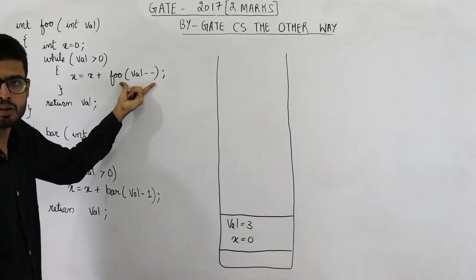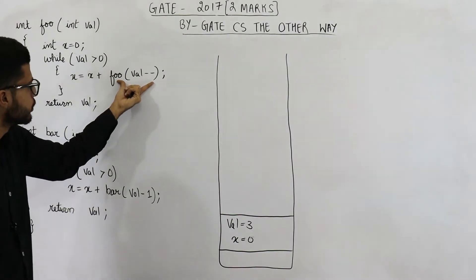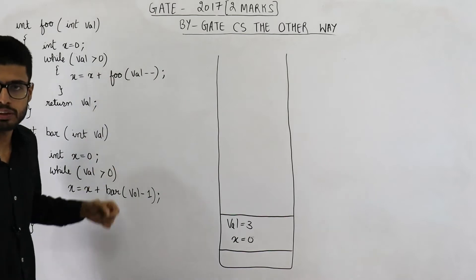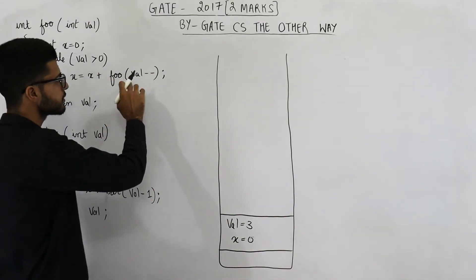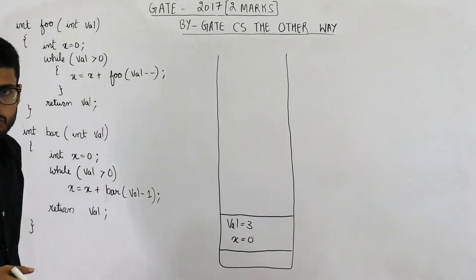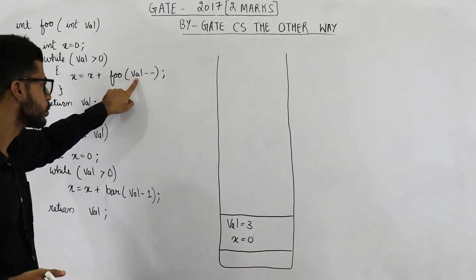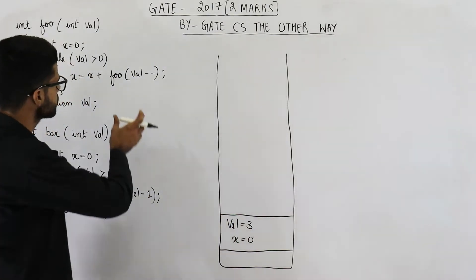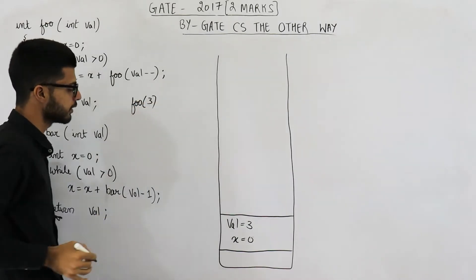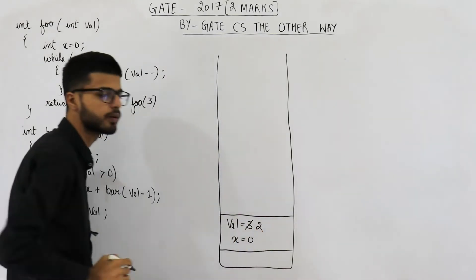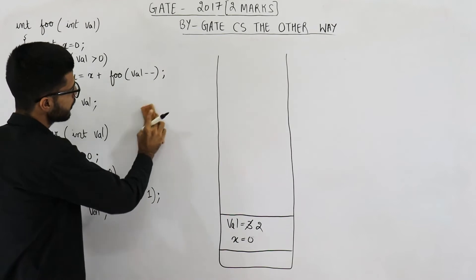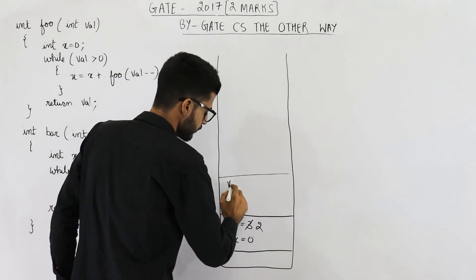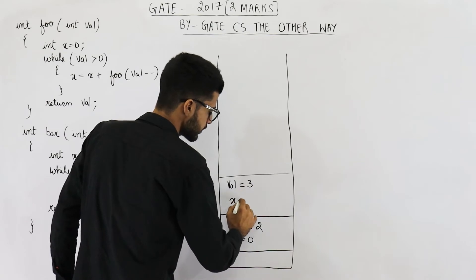That means we need to push one more activation record because we are calling one more function. Now what is being passed to this new function? The current value of val is passed. After passing this value we have to decrement the variable named val. Whenever minus minus is written after a variable, this means we are using the post decrement operator. So how to evaluate it: first use this variable's value, then decrement this variable. Currently val is three, so foo of three is called, then three is decremented and it becomes two. Now we have called a function and passed three as parameter, so the activation record will be pushed and val gets three.